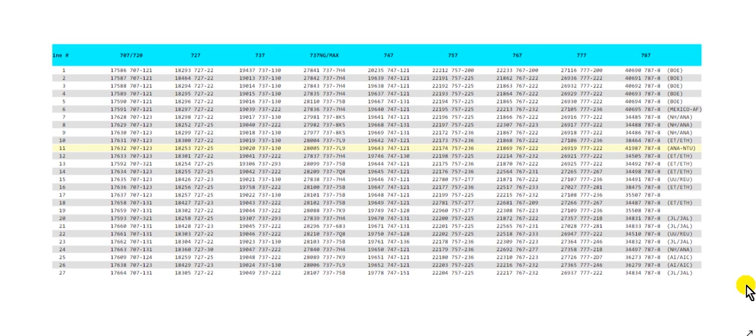Have a nice day everyone. In the last video we discussed the airworthiness directive and the service bulletin to create or issue the engineering order. Now when we go to the service bulletin, sometimes you will see for aircraft group number one or group number two. So what about the groups? How can you identify the aircraft?